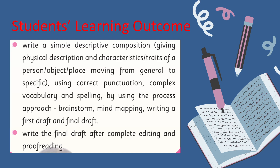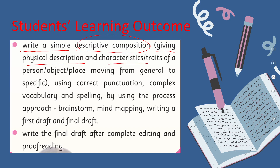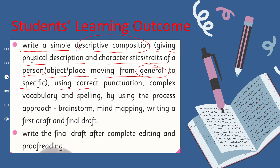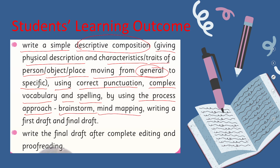The first SLO is: write a simple descriptive composition giving physical description and characteristics or traits of a person, object, or place, moving from general to specific, using correct punctuation, complex vocabulary, and spelling, by using the process approach and techniques like brainstorming, mind mapping, or writing a first draft and a final draft.